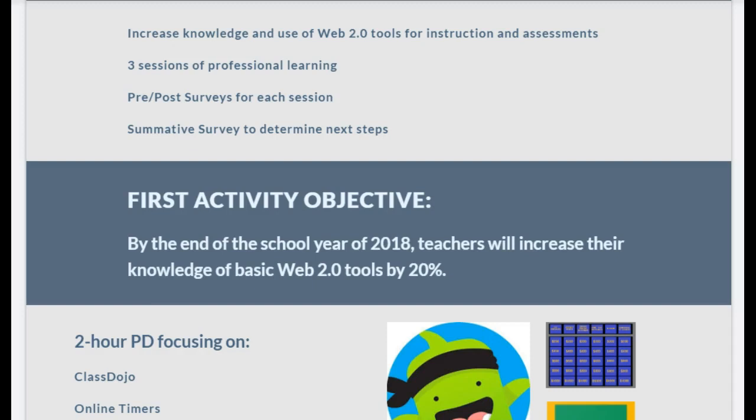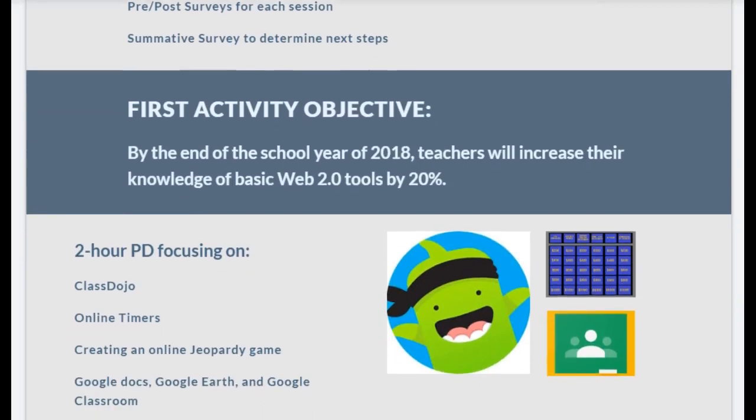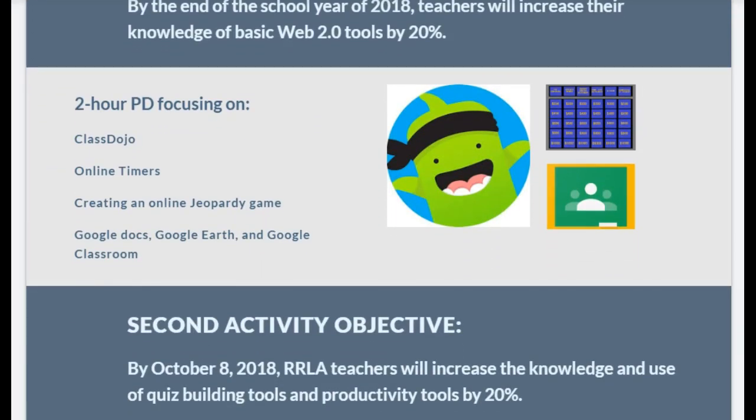The first project will be broken into two sessions. The first one-hour session will take place during post-planning for school year 2018 and will focus on classroom management and study tools such as Class Dojo, online timers, and online Jeopardy. Teachers will also learn about tools available online through Google Apps since Muscogee County School District has recently created Google accounts for all students. I will model how to use Google Classroom, Google Earth, and Google Docs. Teachers will have the chance to explore the tools introduced during training through a scavenger hunt given to them on a Google Doc. Teachers will complete a questionnaire documenting their knowledge of Web 2.0 tools after the training.